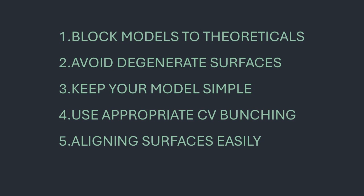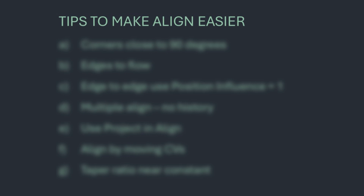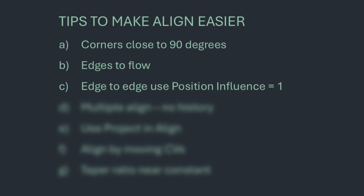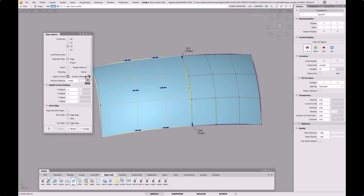Aligning surfaces is something many people find very difficult, so here are some tips to make it easier. As discussed, keeping the surface corners close to 90 degrees is always a good thing, particularly when it comes to alignment — anything between 45 and 90 degrees is good in practice. You also want to try to make your surface edges flow, meaning the edge curves should be G1 in both directions. It not only makes alignment easier but improves the quality of highlights in those corners. If you've got two surfaces you want to align at an edge, setting position influence to one means the CVs along those edges are exactly the same, guaranteeing at least G0 continuity.